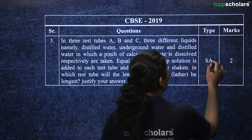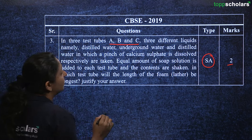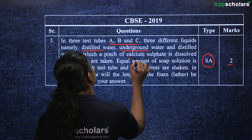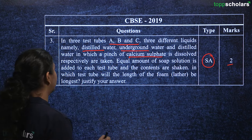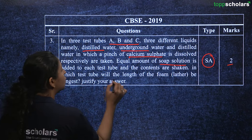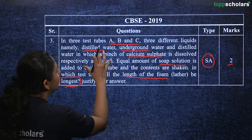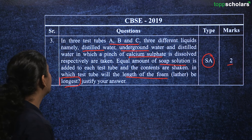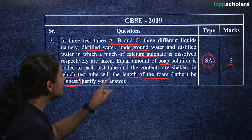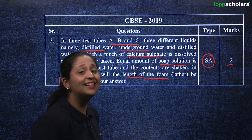There is also a two mark short answer question from 2019. Three test tubes A, B and C contain distilled water, underground water, and distilled water with a little calcium sulphate dissolved in it. Equal amounts of soap solution are added to each and shaken. In which test tube will the length of foam be the longest? The foam will be least in underground water due to impurities, followed by distilled water, and highest in the calcium sulphate solution.